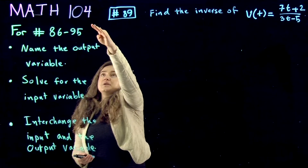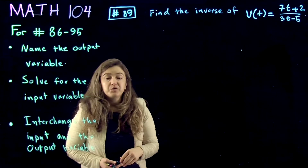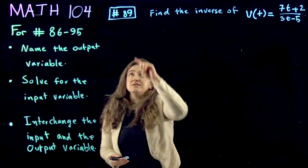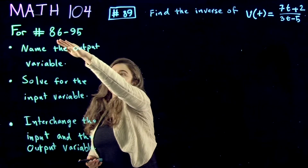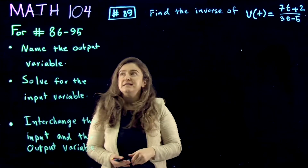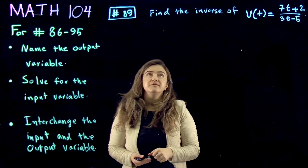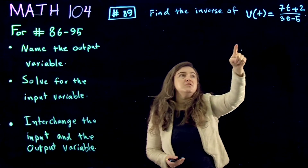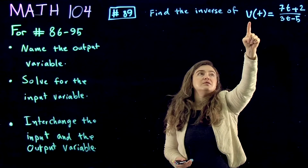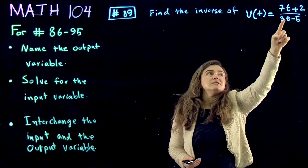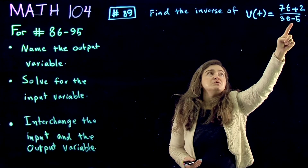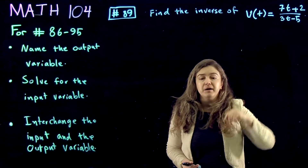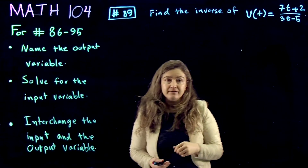We're continuing with solving Math 104 gateway questions. Question number 89 out of the pool 86 to 95. This is finding the inverse of V of t equal to 7t plus 2 divided by 3t minus 5.